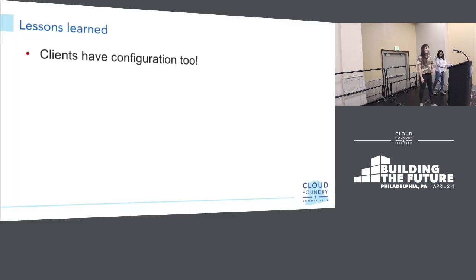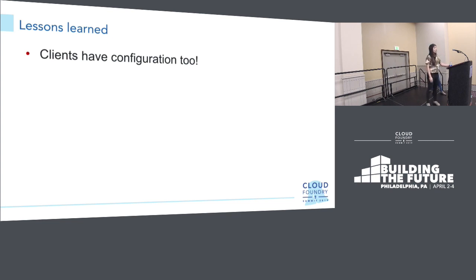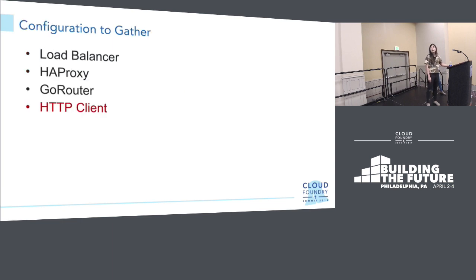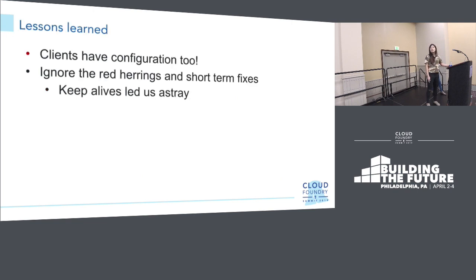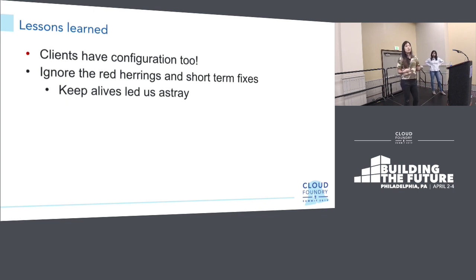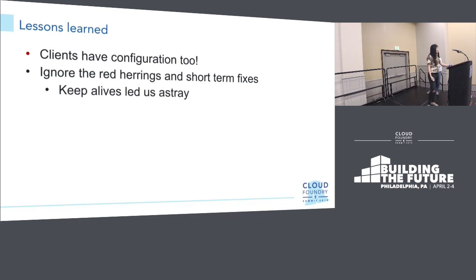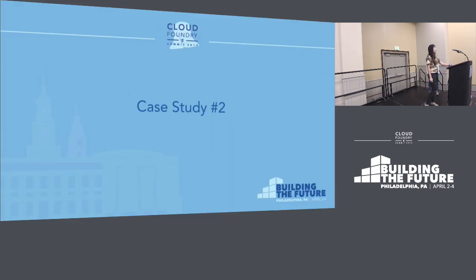What lessons can we learn from this debugging exploration? One of the main things we took away is that clients can have configuration too. It's easy to think about the routing tier as just the system components, but your application is an important part of that routing tier with configuration that is set. When gathering configuration you should always gather information about the HTTP client as well. Additionally, we learned that we should probably be ignoring red herrings and short-term fixes. The HTTP keep-alive from go router to backends wasn't helping with root cause analysis — it led us astray — and only after we figured out the root cause did we go back and figure out how setting that value could fix the problem in the short term. With that I'll hand it over to Nithya to talk about the second case.